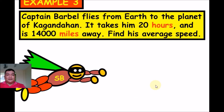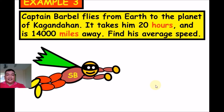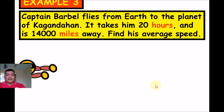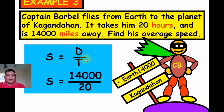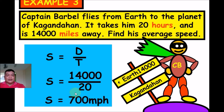Example 3: Captain Barber flies from Earth to Planet Kagandahan, 14,000 miles away, in 20 hours. Find his average speed. Speed = Distance ÷ Time. So 14,000 ÷ 20. Cancel the terminal zeros: 1,400 ÷ 2 = 700. The average speed is 700 miles per hour.